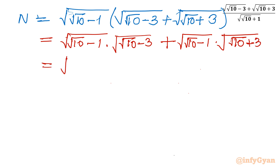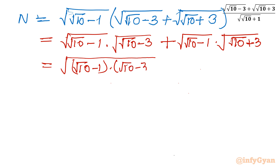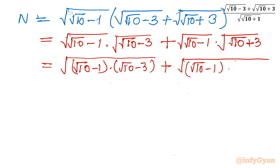I will take one common square root and inside write (√10 minus 1) — since the exponents are the same and bases are different, we can consider multiplication in the base. So I will write: square root of [(√10 minus 1)(√10 minus 3)] plus square root of [(√10 minus 1)(√10 plus 3)].